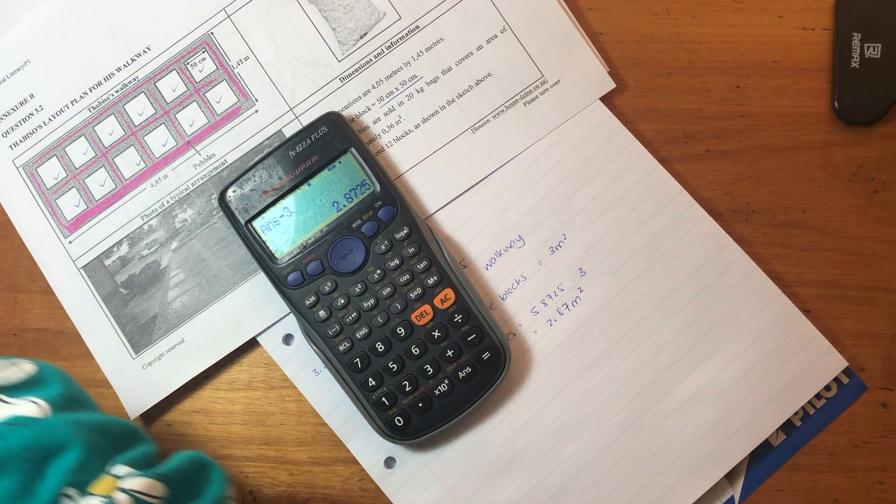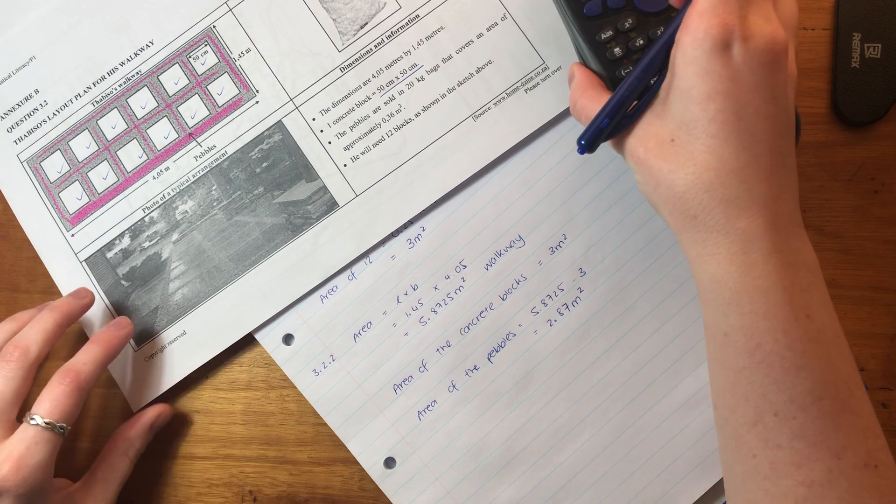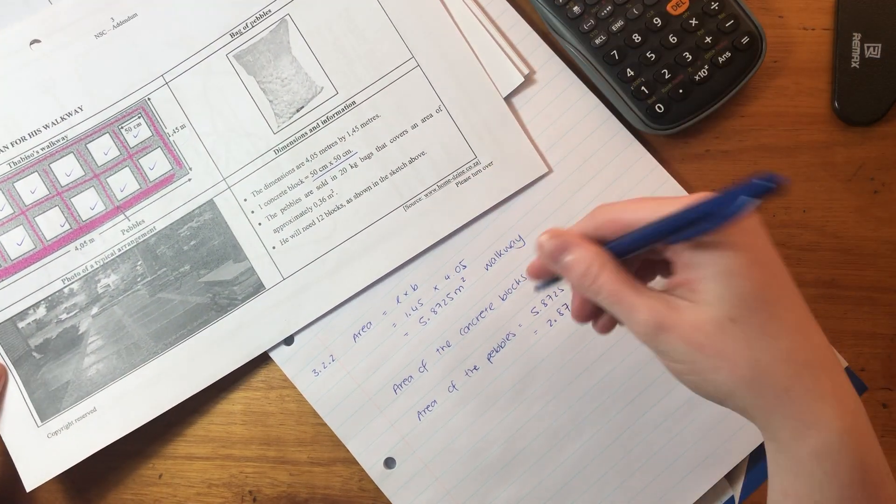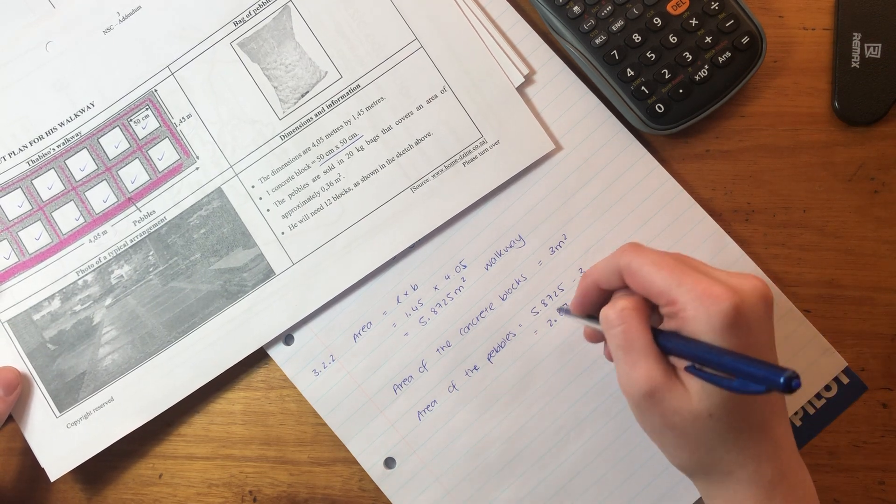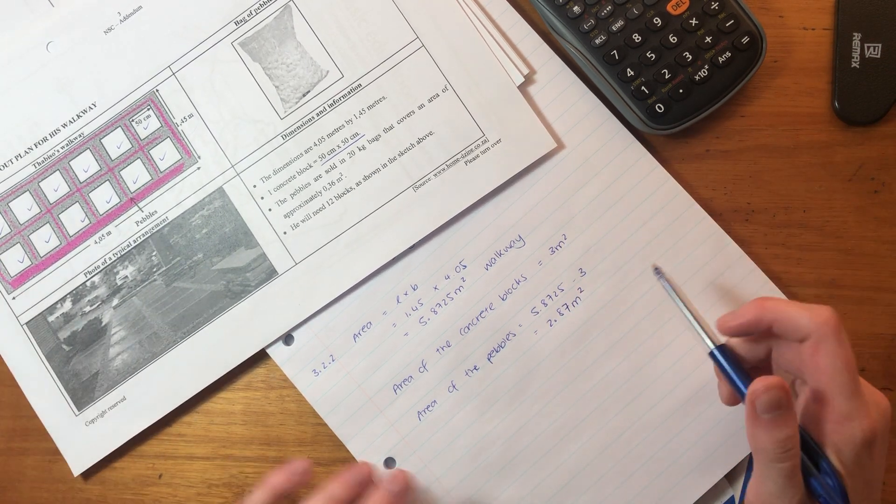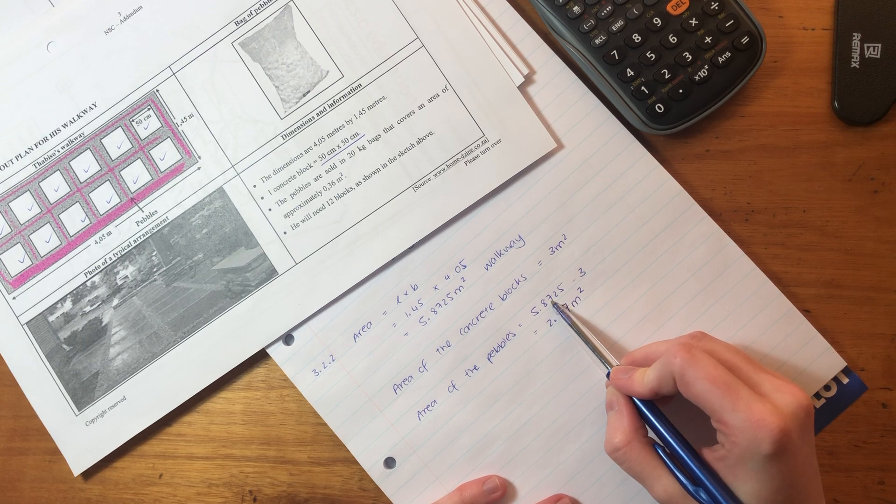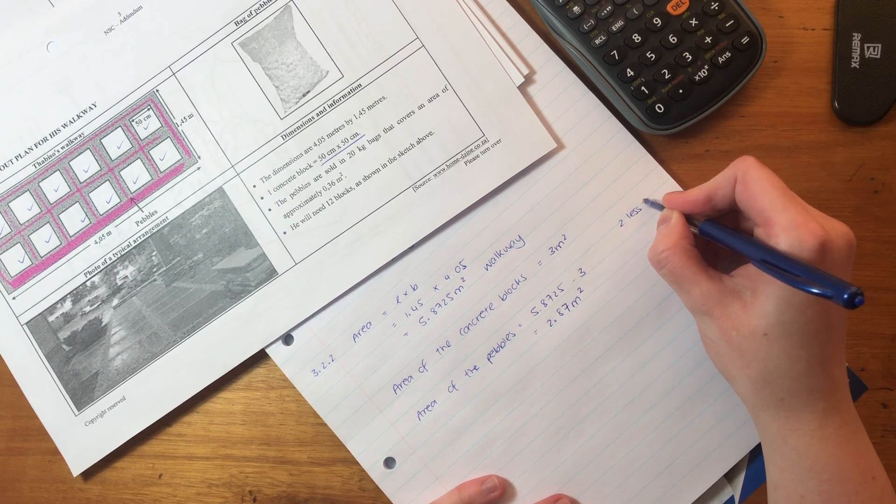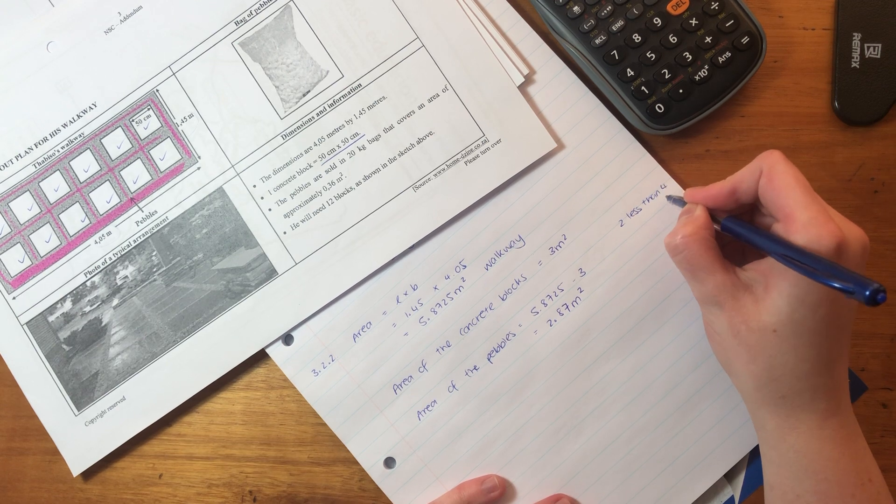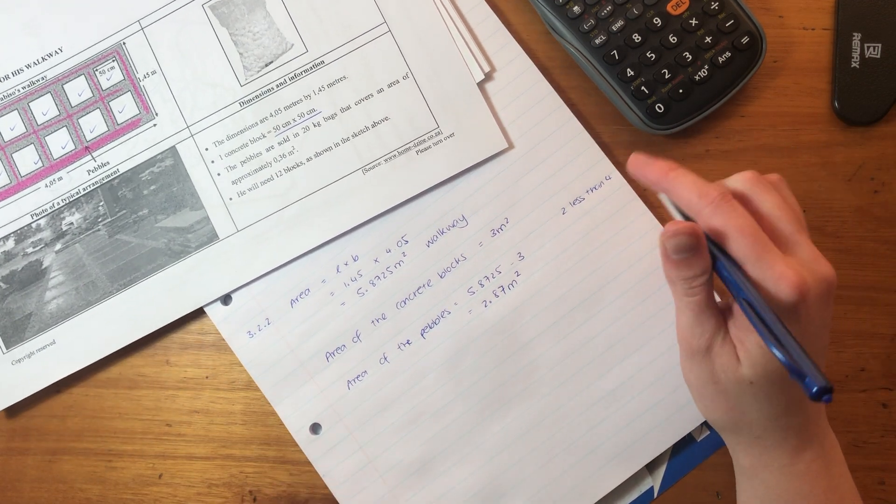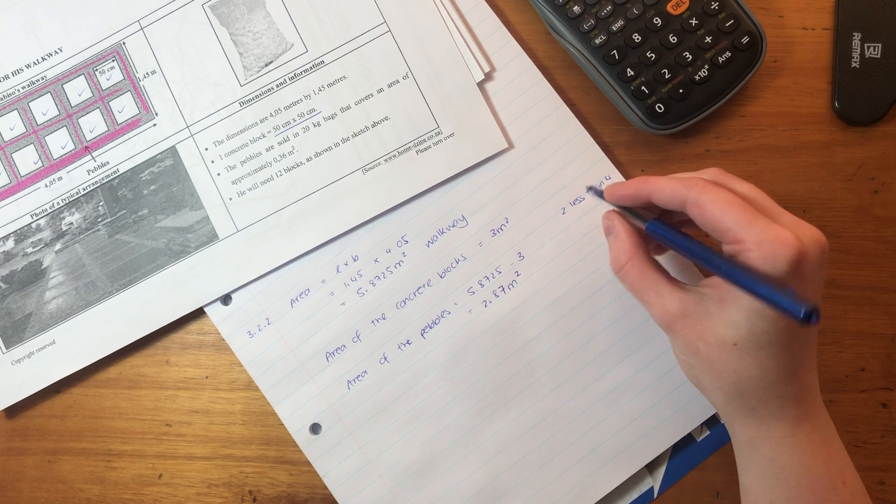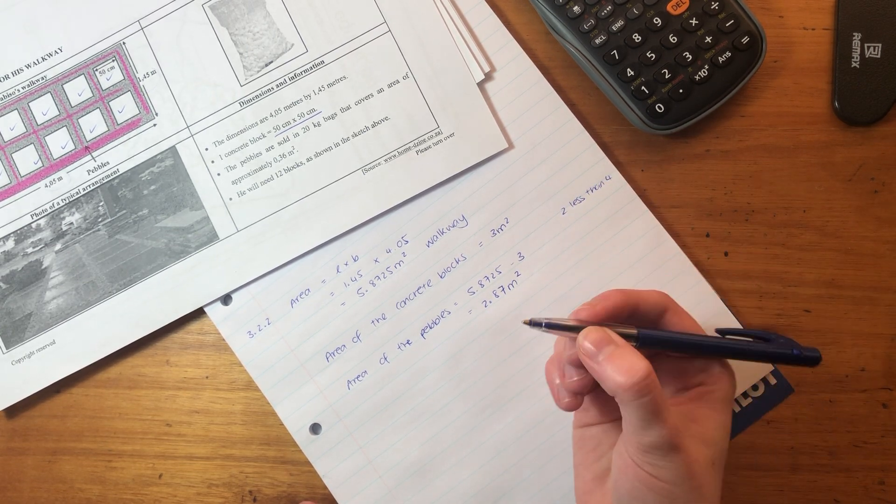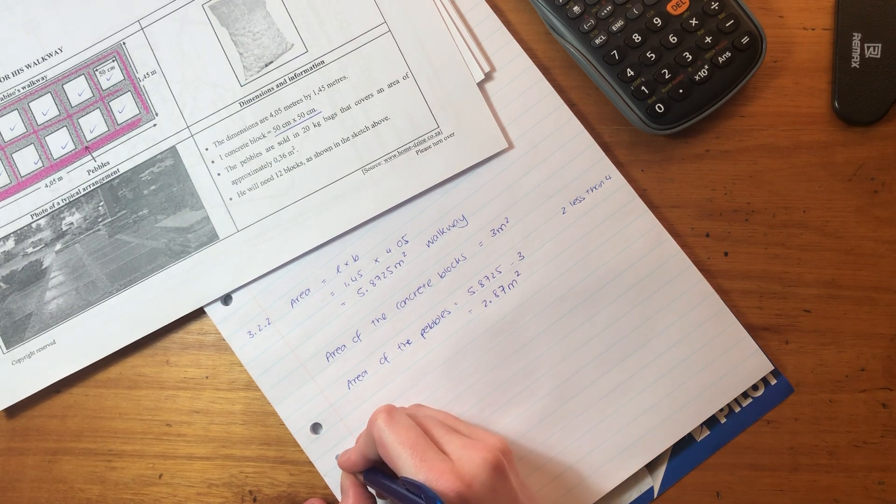So that is basically how we do that question. Let's now move on. I'm just putting 2.87 so that we rounded it off. Remember, the reason I'm rounding it off to seven and not to eight is because two is less than four. And remember what we said, we said when something is less than four, we round down. When it is greater than five, we round up. So that is our final answer there.